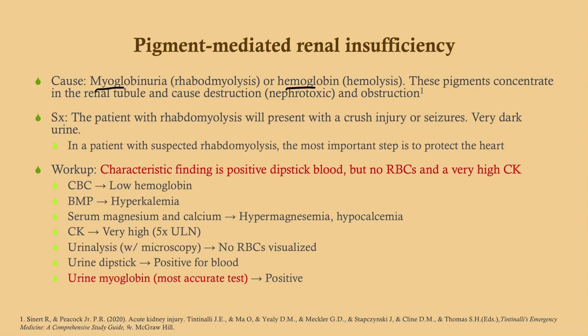Labs in rhabdomyolysis: CBC may show low hemoglobin; BMP shows hyperkalemia; you can have hypermagnesemia and hypocalcemia. Creatine kinase will be very high due to muscle breakdown. On urinalysis, the urine dipstick is positive for blood, but you will not see red blood cells on microscopy — that's the giveaway, because the dipstick detects hemoglobin and myoglobin reacts similarly, but there are no whole red blood cells. Urine myoglobin will be positive.